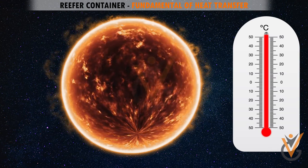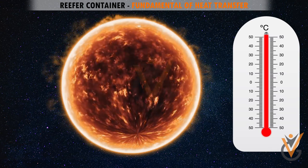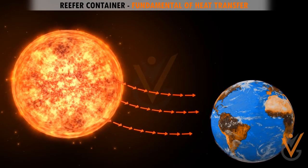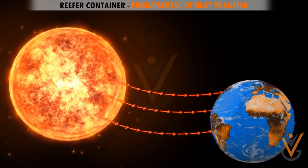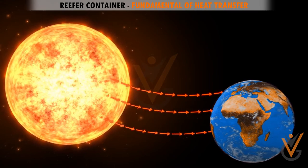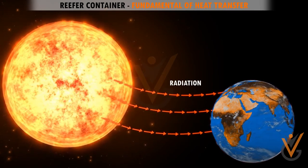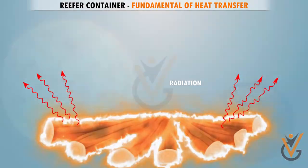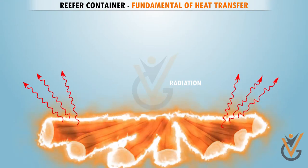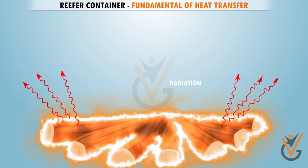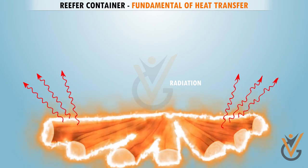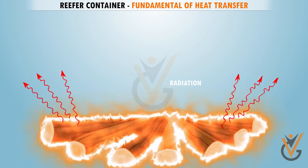In conduction and convection there is a medium through which heat gets transferred. But there is no medium between the sun and the earth, yet we still get heat from it. When heat transfer takes place without any medium, it is called radiation. You must have seen people sitting around a fire — here heat is transferred in the form of radiation. In fact, every hot body radiates heat and becomes cold.